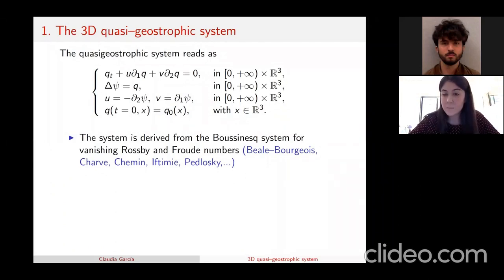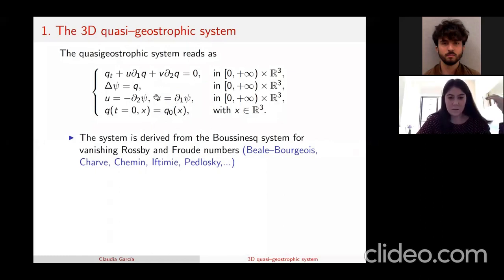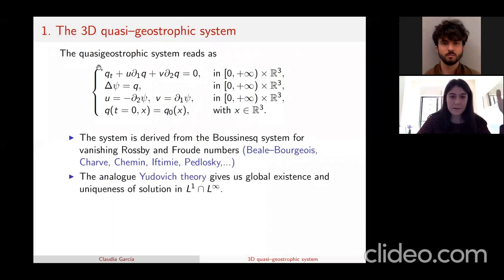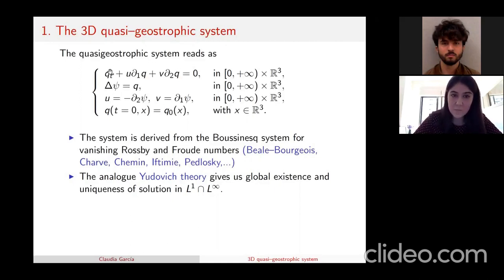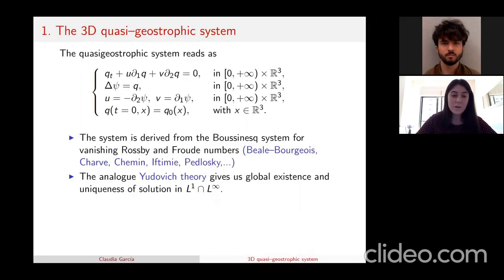The derivation takes the QG approximation and vanishing Rossby number. This derivation is classical and can be found in many places. Comparing this system with the Euler equations, it has similarities with both the 3D and 2D Euler equations. The main point is that we don't see the bad term in the 3D Euler equation, which is the stretching term, making things easier. It also shares properties with the 2D Euler equations — for example, we have a pure transport equation for q, analogous to vorticity in 2D Euler.